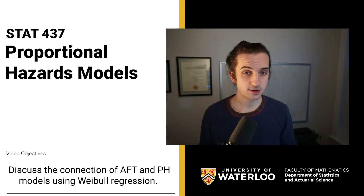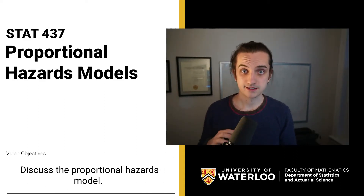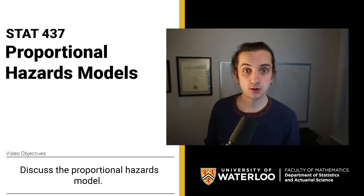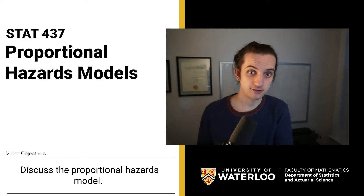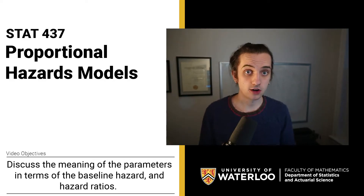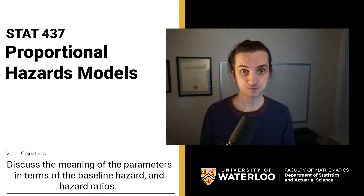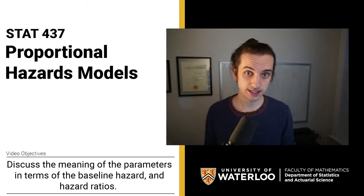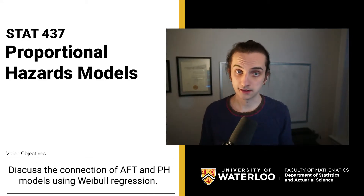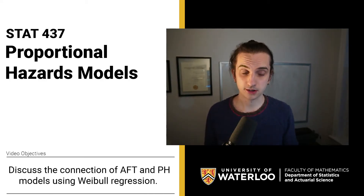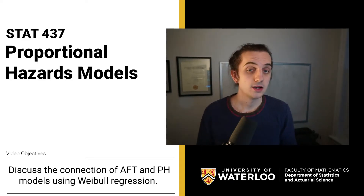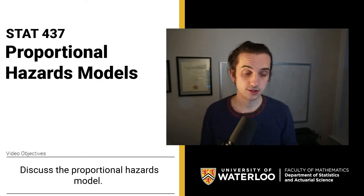Proportional hazard models are probably slightly more commonly used. They predate accelerated failure time models and they're a really natural idea, but they're not so connected to the location scale formulation that we were using before. Instead, the idea with a proportional hazards model is that we're going to start from trying to model the hazard function itself, and doing this there's a natural way of doing it. The reason that we like that is because it's tightly connected to the likelihood that we talked about before.